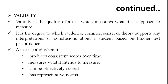The next characteristic is validity. Validity is the quality of a test which measures what it is supposed to measure. It is the degree to which evidence, common sense, or theory supports any interpretations or conclusions about a student based on his or her test performance. A test is valid when it produces consistent scores over time, measures what it intends to measure, can be objectively scored, and has representative norms.